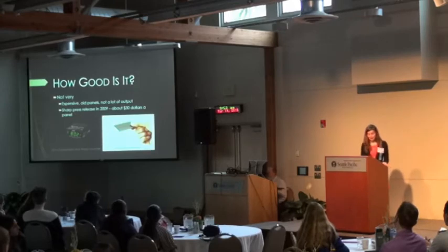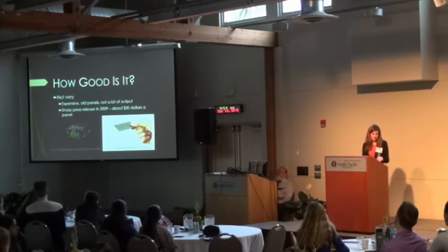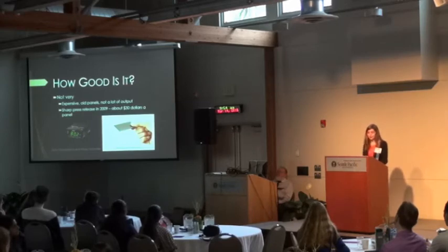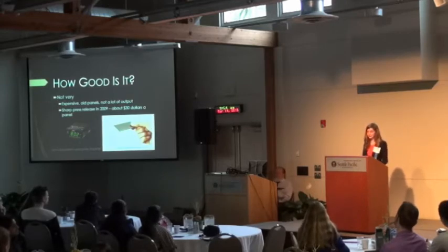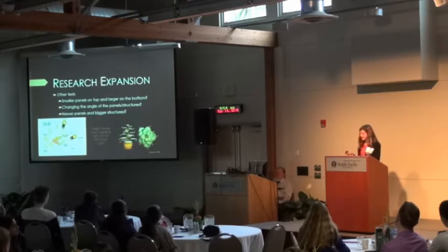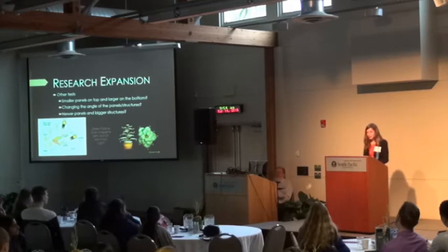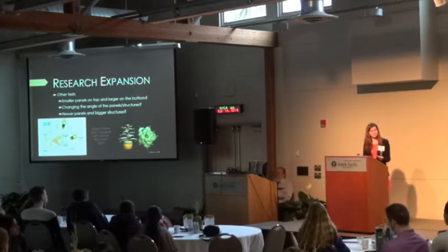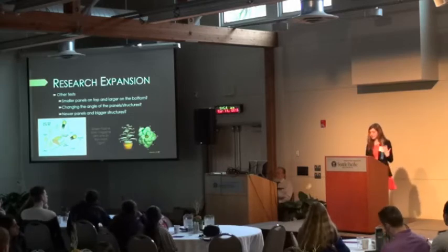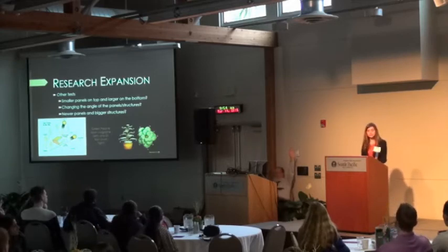Though I got some really great data and achieved what I set out to do, the question that remained was how good the structures I built really were. I had to conclude they weren't very good. The panels were originally supposed to sell for about $30 a piece, and with my data, I could only power a radio alarm clock, some LED Christmas lights, or a small nightlight. The panels were also pretty old — Sharp released them in a press release in 2009, originally intended for auxiliary power for mobile devices — and I was testing in exceedingly poor conditions. There are several tests I could run to improve output, such as using different sizes of photovoltaics to mimic how plants have smaller leaves on top and larger on the bottom, arranging panels at the optimal angle for our latitude, or simply increasing the size and quality of my structures.